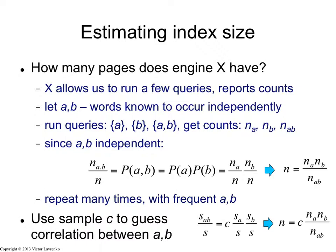but they might not be independent in the overall sample that X has. So the way I would take care of that is I would run the whole procedure multiple times with many different pairs ab, get many different estimates for N, and then average that out. So the idea is some words will be slightly positively correlated, some words will be slightly negatively correlated, and overall I should get a clear picture of what the index size is after I do the averaging. By the way,